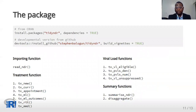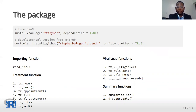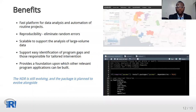It's available for installation from both GitHub and CRAN. Where possible, we named the functions similar to the PEPFAR program indicators that users are already familiar with. These functions are grouped into one import function, seven treatment-related functions, four viral load functions, and two summary functions. The benefits of the package include: it provides a platform for data analysis and automation of routine projects, analysis conducted using the package is reproducible, it can be used to analyze large volumes of data, it supports easy identification of program gaps for tailored intervention, and provides a foundation upon which other relevant program applications can be built.